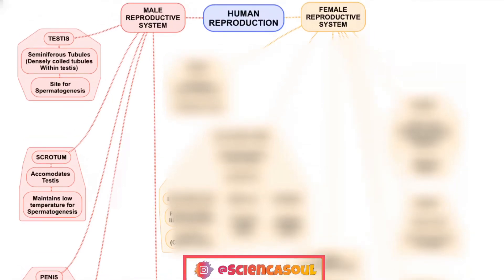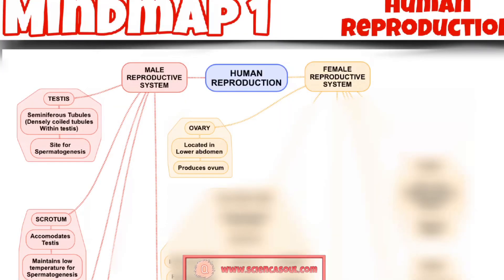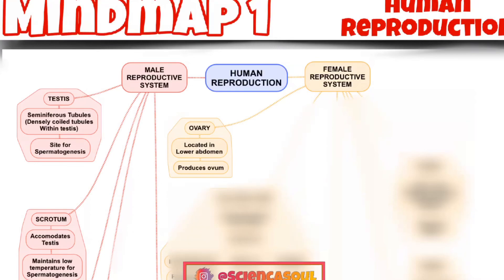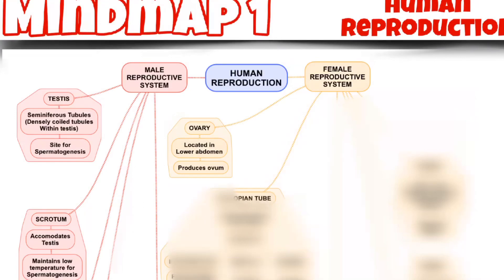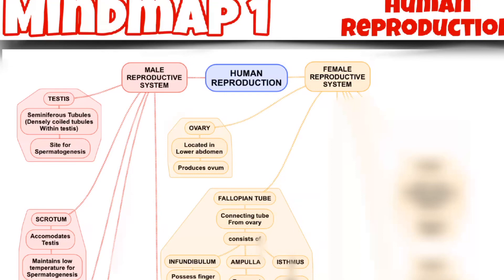Next is the female reproductive system. Part 1 is the ovary, located in the lower abdomen, which produces the ovum. These are the primary female sex organs that produce female gametes and several steroid hormones, for example estrogen and progesterone. Remember, these are steroid hormones — this question is asked many times.